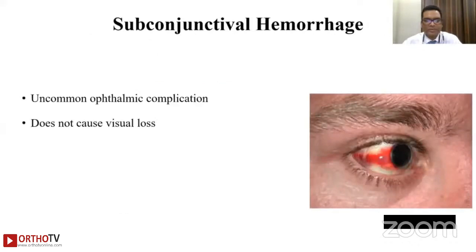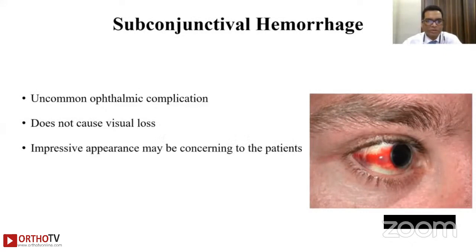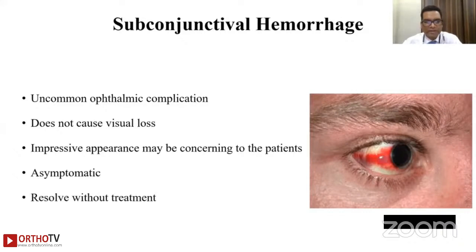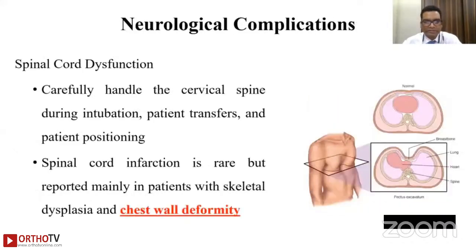Subconjunctival hemorrhage is an uncommon ophthalmic complication that does not cause visual loss. Its impressive appearance may be concerning to patients, but it is usually asymptomatic and resolves without treatment.